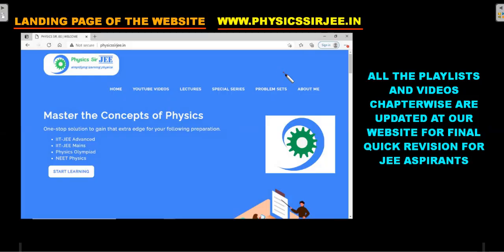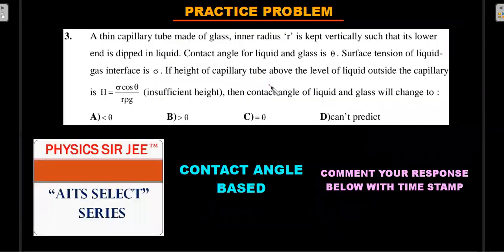Here's the practice problem that I promised. So this is regarding the understanding of the contact angle, when to use, when not to use the logic that Young's equation gives. And this is one of the concepts that was asked also in the previous JEE papers of insufficient length. So read the question carefully. This appeared in one of the China AIATs in the last few weeks, and comment your answer along with the time stamp in the comment section below. Time stamp is important so that I can respond.